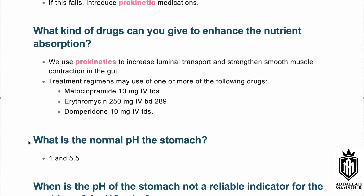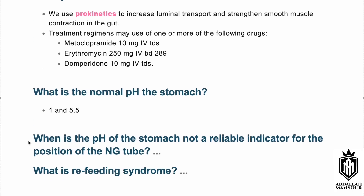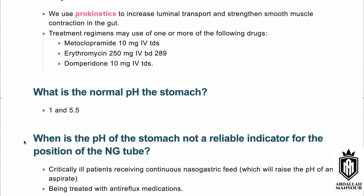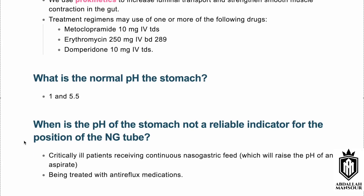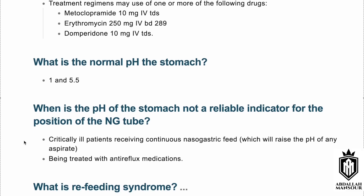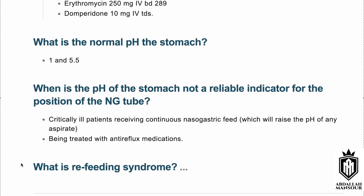The normal pH of the stomach is 1 to 5.5. The stomach pH is NOT a reliable indicator for NG tube position in patients who are acutely unwell, in a continuous catabolic state, or currently on anti-reflux medication, as these conditions alter gastric pH.